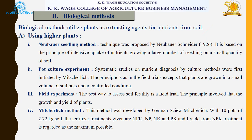Under biological methods using higher plants, the first is the Nuber seedling method. This technique was proposed by Nuber in 1926 and is based on the principle of intensive uptake of nutrients by growing a large number of seedlings on a small quantity of soil. Next is the pot culture experiment, where systematic studies on nutrient diagnosis by culture methods were first initiated by Mr. Leach. Plants are grown in a small volume of soil in pots under controlled conditions. The next method is field experiment, which is the best way to assess soil fertility, involving the growth and yield of plants.